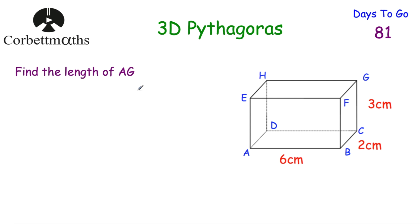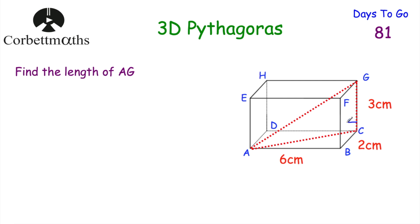I'm going to do this question for you, but feel free to pause the video and try it yourself. We've got a cuboid where AB is equal to 6 centimetres, BC is equal to 2 centimetres, and CG is equal to 3 centimetres, and we've been asked to find the length of AG. To find this diagonal AG, I want to find the lengths of right angle triangle ACG, and since it's a right angle triangle, if we can find two of the lengths we can use Pythagoras to find the third.